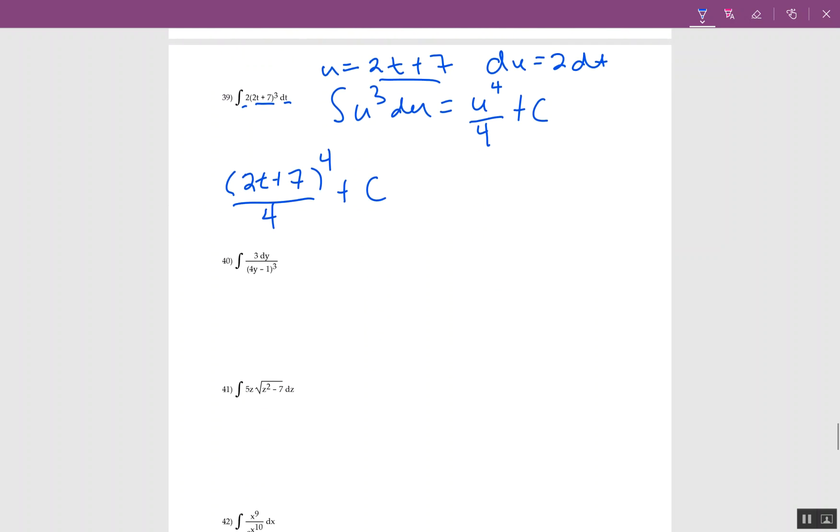I see something similar in number 40. I have parenthesis to a power, so that tells me substitution. So u is 4y minus 1. I take the derivative, I get 4 dy. This time I have a problem because I have 3 dy and my du is 4 dy. So instead of turning 3 into 4, I divide by 4. This says du over 4 is dy.